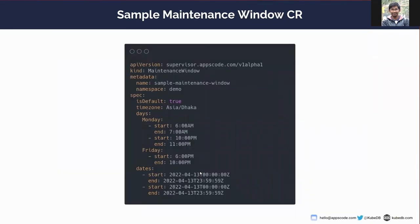Now let's see a sample maintenance window custom resource. It has API version, kind, metadata, and spec sections and is a namespace-scoped object. In the spec section, there is a field called isDefault, which holds whether this maintenance window is used in default cases when the user has not provided a maintenance window. There is also an optional field called timeZone — if provided, the times in the days section are considered accordingly; otherwise, the specified times are considered as UTC. In the days section, the user can specify weekdays and a list of maintenance window times with starting and ending times.